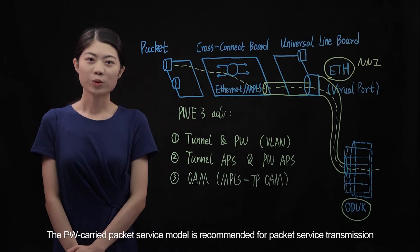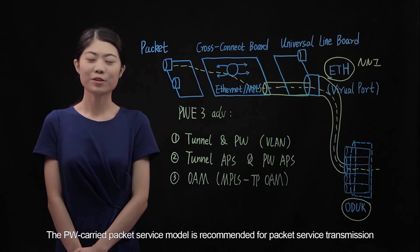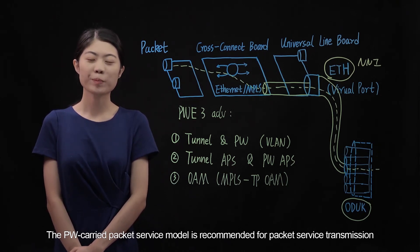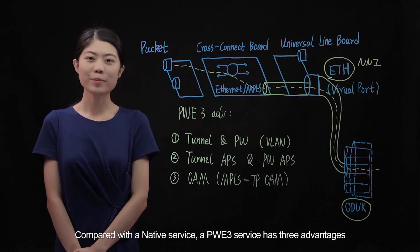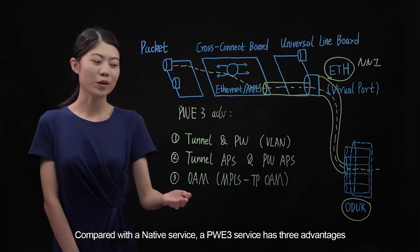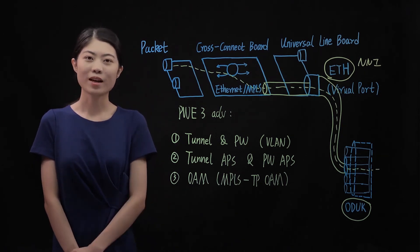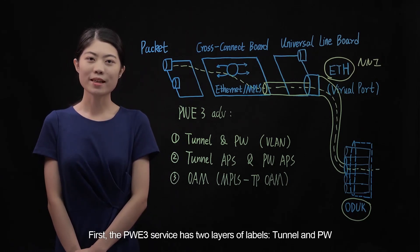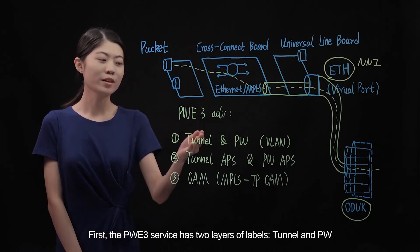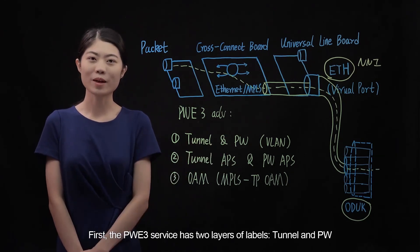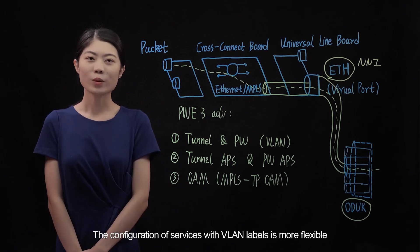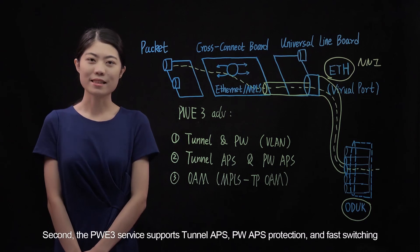The PW-carried packet service model is recommended for packet service transmission. Compared with a native service, a PWE3 service has three advantages. First, the PWE3 service has two layers of labels — tunnel and PW — so the configuration of services with VLAN labels is more flexible.